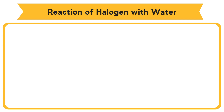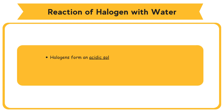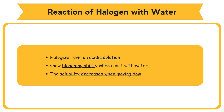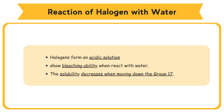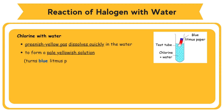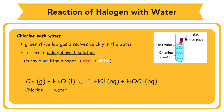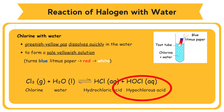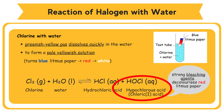Halogens form an acidic solution and show bleaching ability when they react with water. The solubility of halogens in water decreases when moving down Group 17. For chlorine with water: the greenish-yellow gas dissolves quickly in water to form a pale yellowish solution. This solution turns blue litmus paper to red, and then white. Chlorine reacts with water to become hydrochloric acid and hypochlorous acid (chloric-1-acid). Hypochlorous acid is a strong bleaching agent.